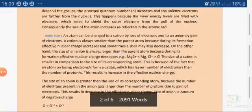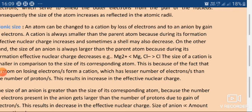The order of radius among species having the same number of electrons — that is, between cations, anions, and neutral atoms — is as follows: the anion has the largest size, the neutral atom has the next larger size, and the cation has the smallest size.